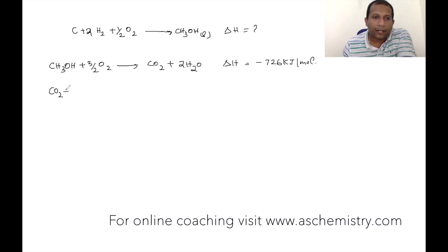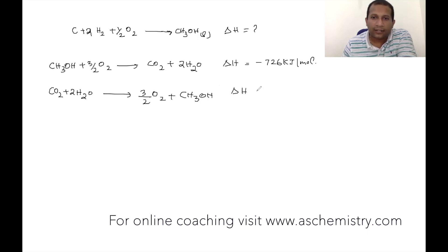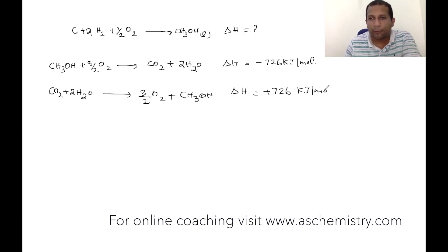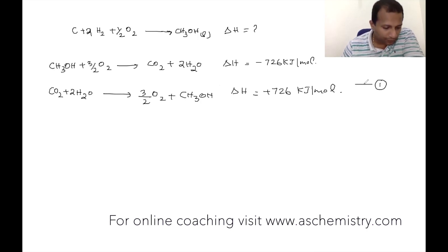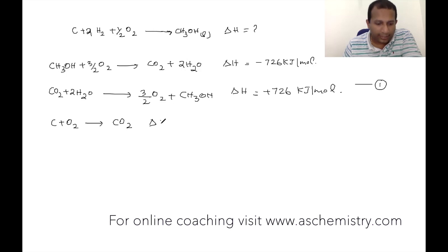The reversed equation is: CO2 + 2H2O → 3/2 O2 + CH3OH. This is Equation 1. The ΔH value is +726 kJ/mol. The next equation is: C + O2 → CO2, with ΔH = -393 kJ/mol.